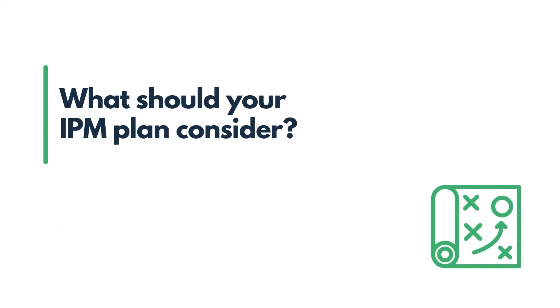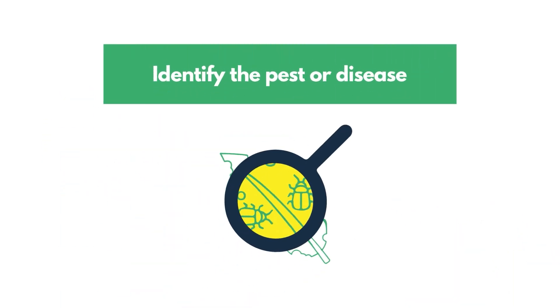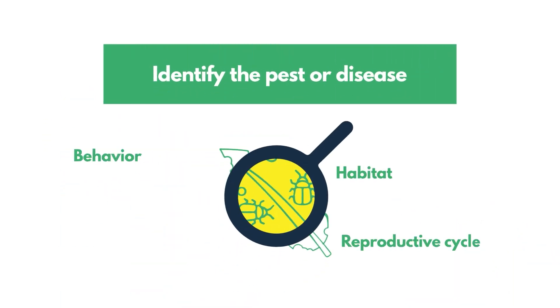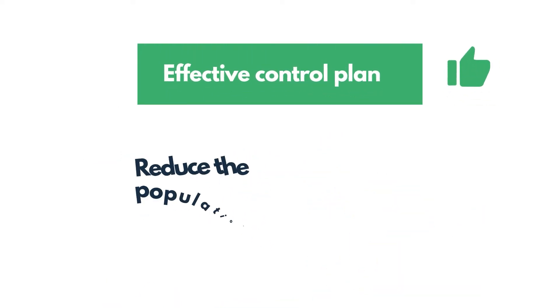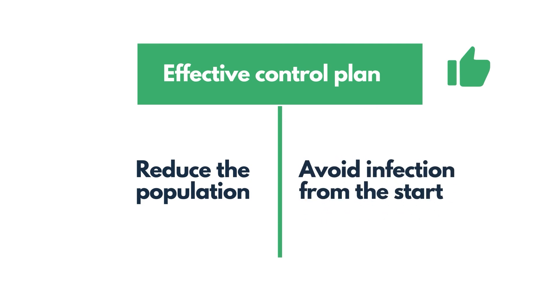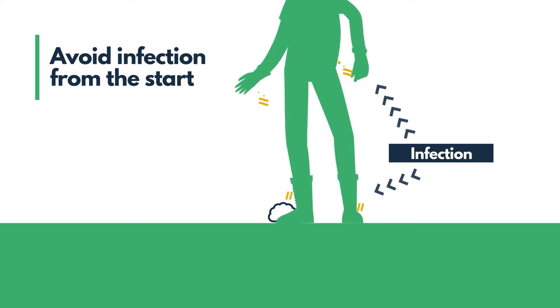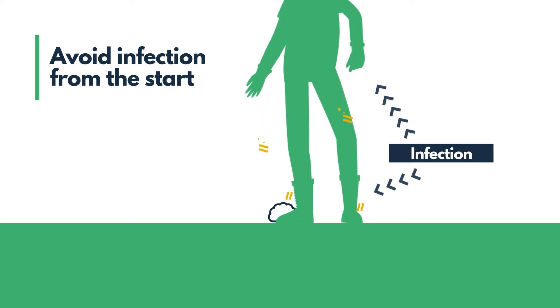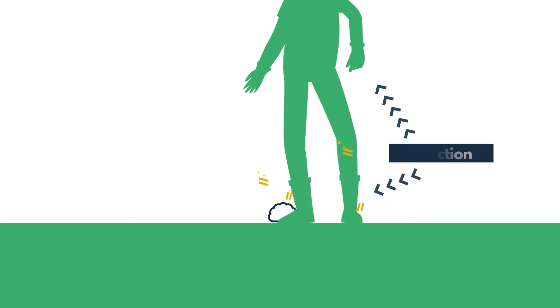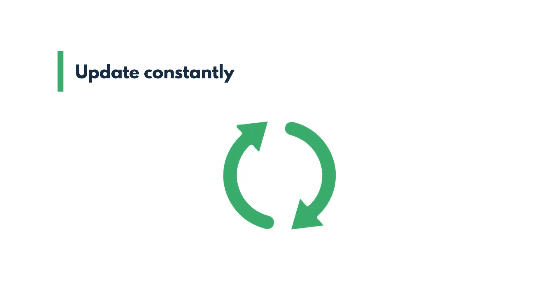What should your IPM plan consider? It is important to identify the pest or disease and know its behavior, habitat, and reproductive cycle. This allows you to create an effective control plan to reduce the impact in your nursery or avoid infections from the start. Identifying the routes by which pests and diseases enter or are dispersed in your nursery — either via inputs brought to the site or through workers — may enable you to avoid pest and disease problems.